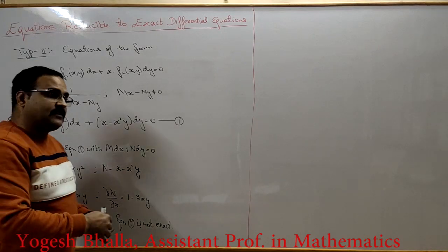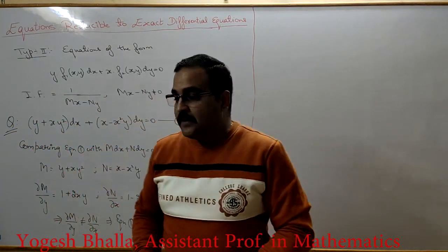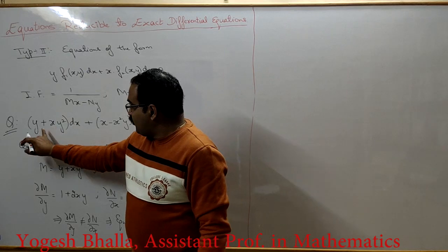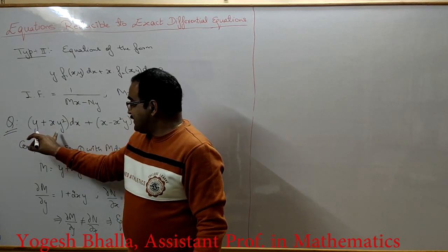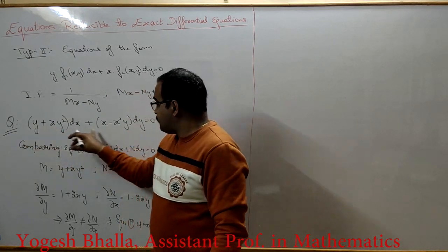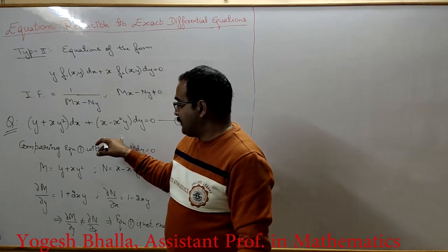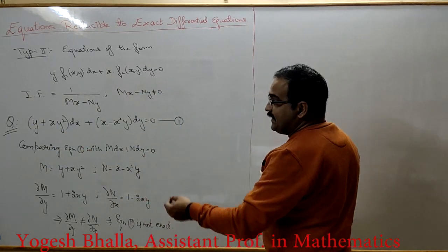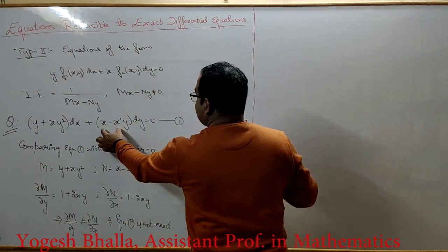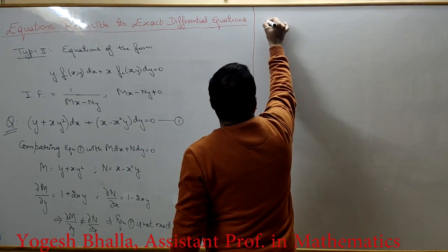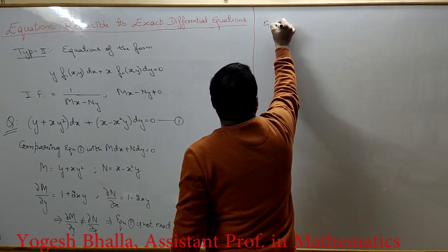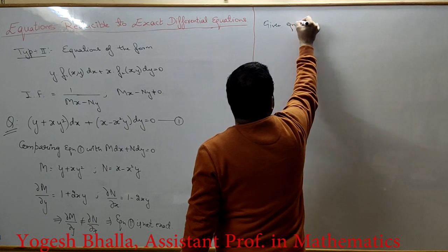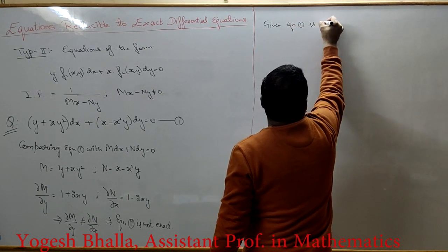Now, can we take y common from the M part? Since it is not a homogeneous equation, Type 2 will be applicable. We can take y common from the first part and x common from the second part. So equation 1 is of the form y·f1(xy)dx + x·f2(xy)dy = 0.